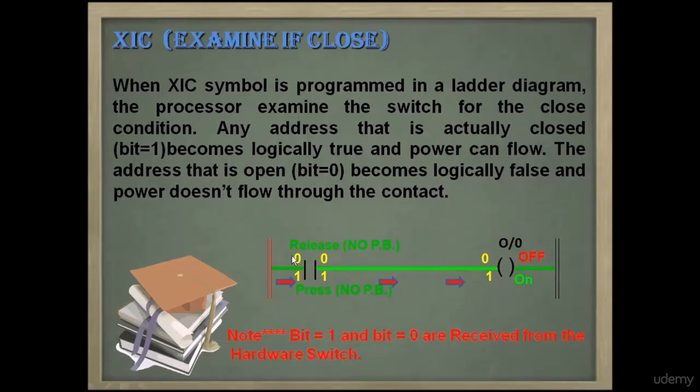0 and 1 bits are applied from the hardware switch on the XIC instruction in software. If bit 0 is applied on the XIC switch, then it passes bit 0, meaning it blocks the supply. If bit 1 is applied on the XIC switch, then the XIC switch passes the power supply and output will turn on for this condition.